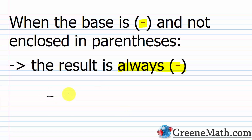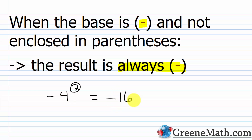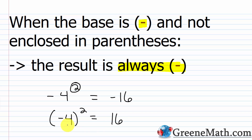For example, negative 4 squared without parentheses — this will always be negative. It's just the negative of 4 squared: 4 squared is 16, so this is negative 16. But if I write negative 4 squared with negative 4 inside parentheses, now I get positive 16, because I have negative 4 times negative 4 — two negative factors gives a positive result. My exponent is even, so I get a positive result.